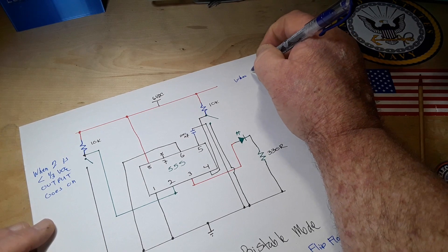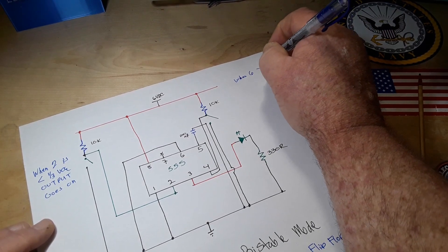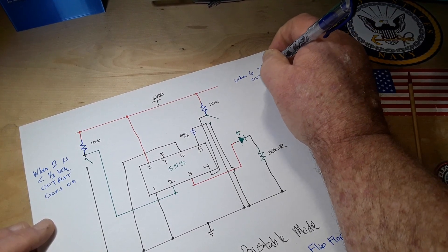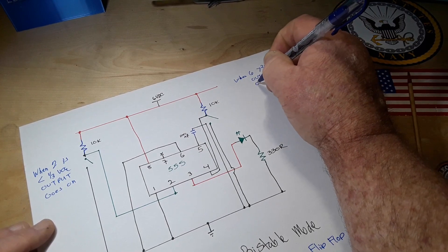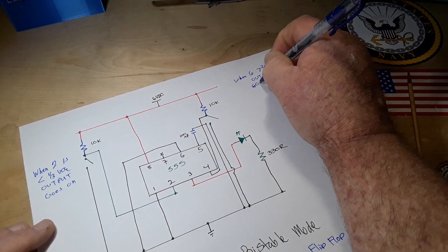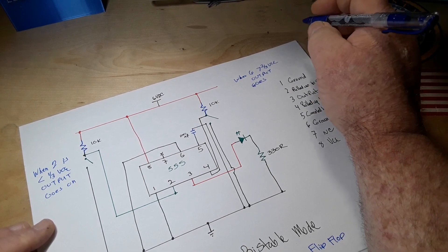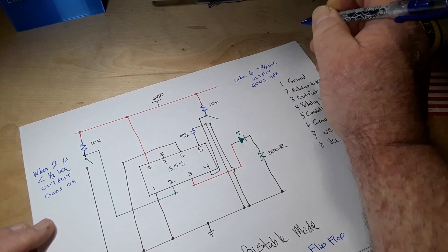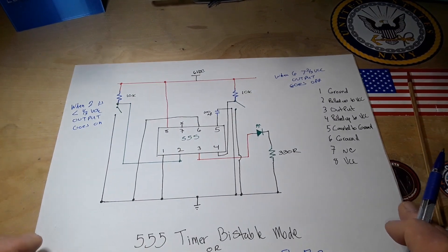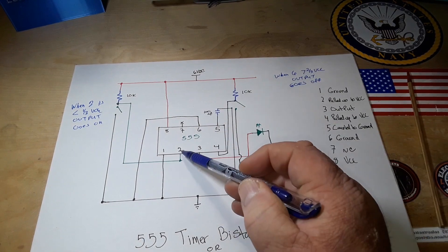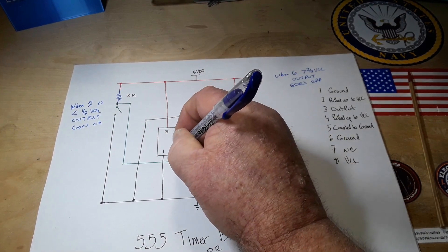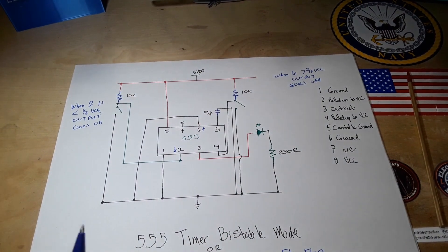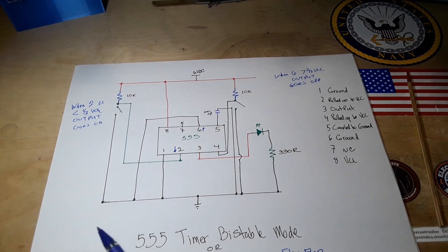Let me write this so that maybe this will help you understand. When pin 2 is less than one-third VCC, the output goes on. When pin 6 is greater than two-thirds VCC, the output goes off. So when this one is low, the output goes on. When this one is high, the output goes off. But this is never going to go high, I'm making it go low.